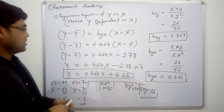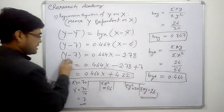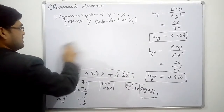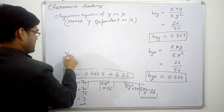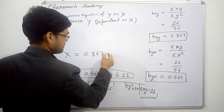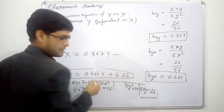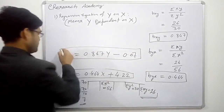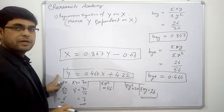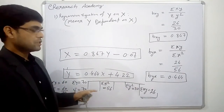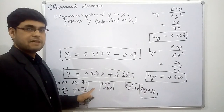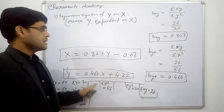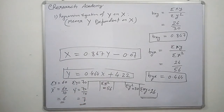So our first equation is x = 0.867y − 0.07, and our second equation is y = 0.464x + 4.22. Friends, thank you very much for watching this video. If you have not subscribed to this channel, please subscribe and share it with your friends. Have a nice day and God bless — see you next time.